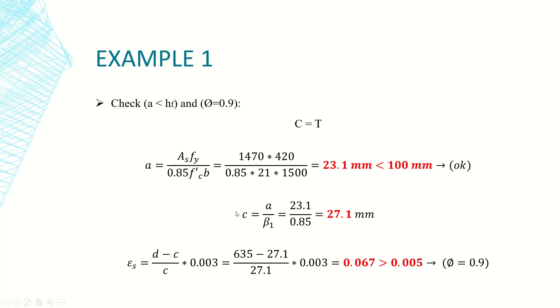c is the actual depth of the neutral axis. So we divide a by beta 1, and we mentioned last time that beta 1 equals 0.85 for compressive strength less than 28 MPa. So c will equal around 27 millimeters.